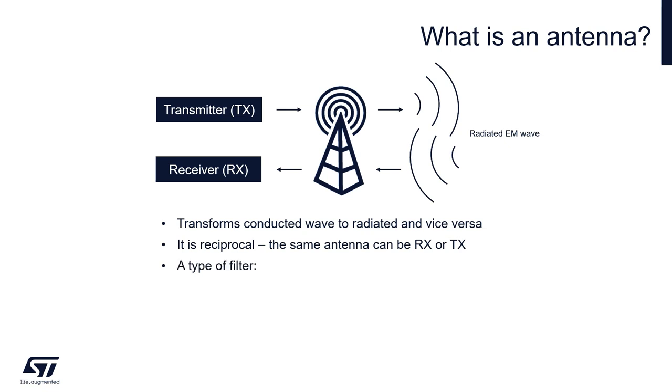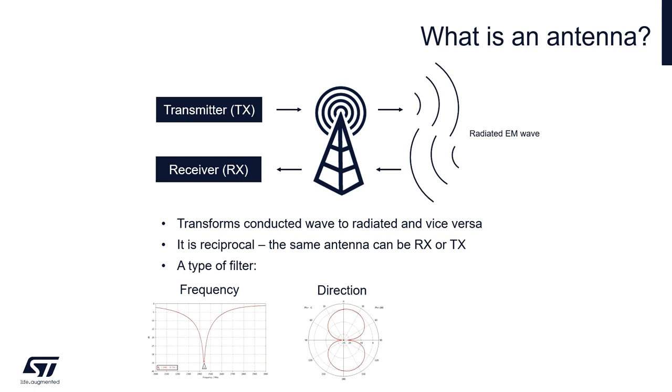We can see the antenna also as a kind of filter: a frequency filter - it works only in some frequency range; a directional filter - some directions are radiated or received better, some are attenuated; and a polarization filter - it may filter the signal according to wave polarization.